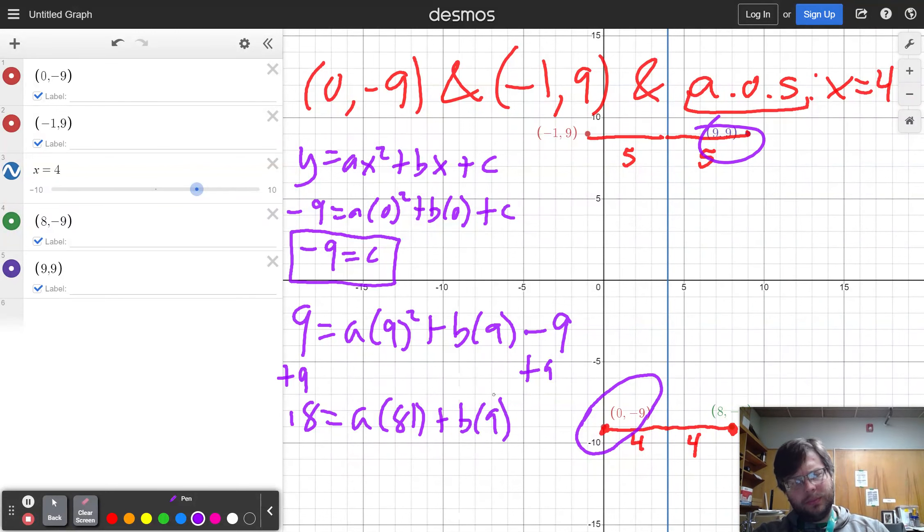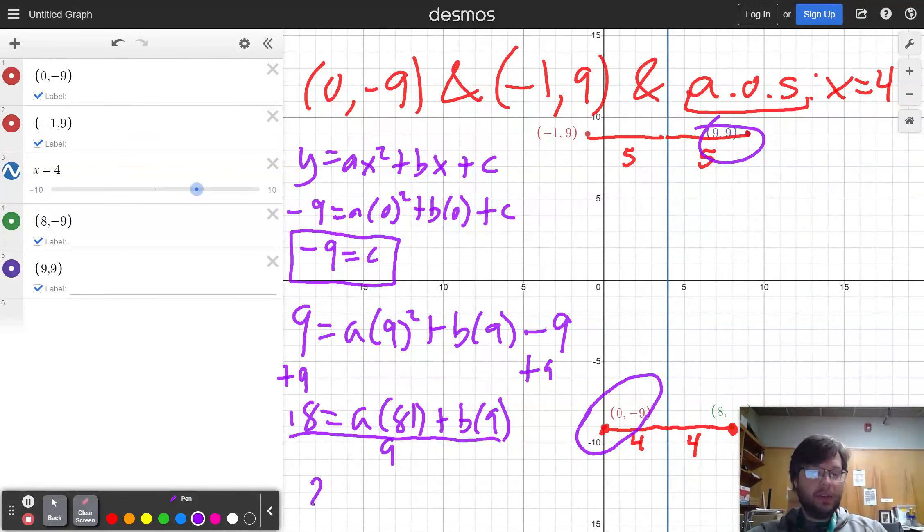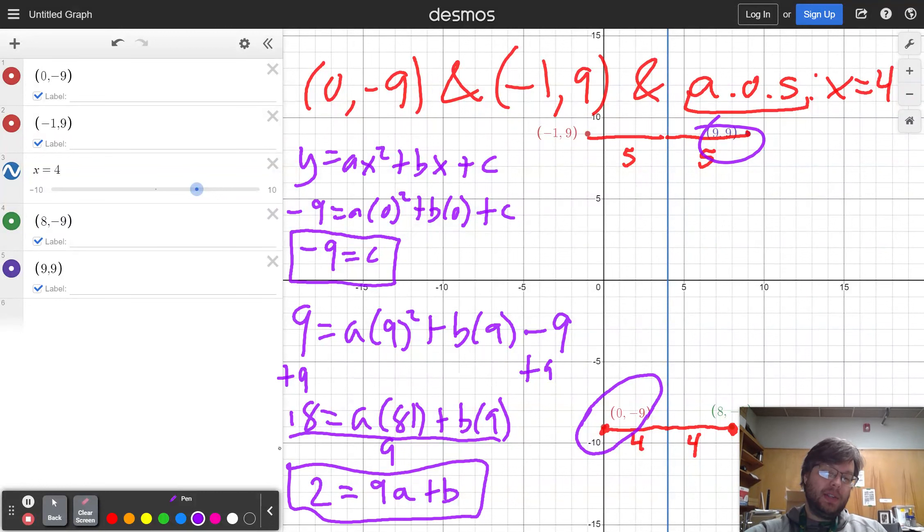I'll go ahead and add 9 to both sides to get 18 equals a times 81 plus b times 9. And this is optional, but I'm going to divide everything by 9 because if you divide everything by 9, you get smaller numbers like 2 equals 9a plus b. I'm going to put a box around that and we'll use that again in a second.